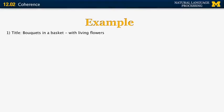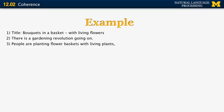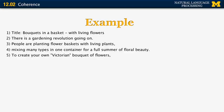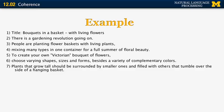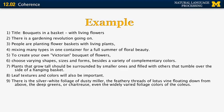Let's look at an example of a discourse analyzed using Rhetorical Structure Theory. The document comes from the Christian Science Monitor. The title is 'Bouquets in a Basket with Living Flowers.' It reads: 'There is a gardening revolution going on. People are planting flower baskets with living plants, mixing many types in one container for a full summer of floral beauty. To create your own Victorian bouquet of flowers, choose varying shapes, sizes, and forms besides a variety of complementary colors. Plants that grow tall should be surrounded by smaller ones and filled with others that tumble over the side of a hanging basket. Leaf textures and colors will also be important.' And then descriptions of dusty miller, lotus vine, and coleus foliage.